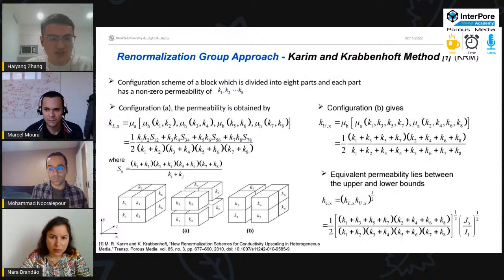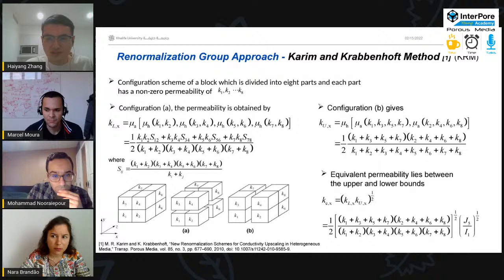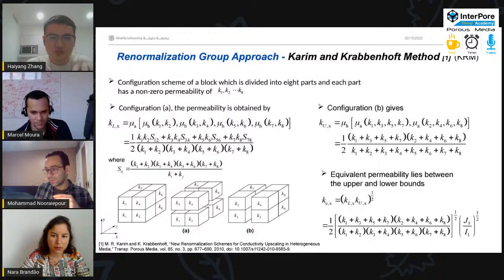This is an introduction to one of the renormalization methods, which is proposed by King and Krabenhoft, which termed KRM. To calculate the permeability of the whole block, they divide it into eight parts, and each part has a non-zero permeability. There are two combination ways.